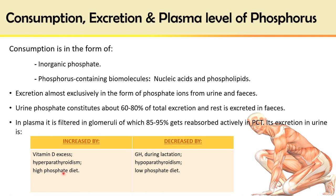Vitamin D excess causes increased absorption of phosphate from the GIT, raising blood phosphate levels and increasing its excretion from the kidney. Parathyroid hormone has the opposite effect — it increases calcium reabsorption and decreases phosphate reabsorption from the proximal convoluted tubule, increasing urinary phosphate excretion. Growth hormone, with its anabolic effect, causes deposition of calcium and phosphate, decreasing blood phosphate level and thus urinary excretion. Hypoparathyroidism increases phosphate reabsorption and decreases its urinary excretion.